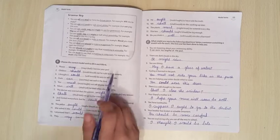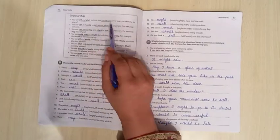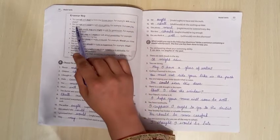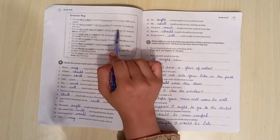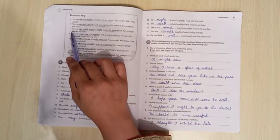Now come to the next page. Come to the grammar help box. You use will and shall to form the future tense. For example, will she be angry? Next, you use can and could to talk about ability. For example, Sue can play the violin.